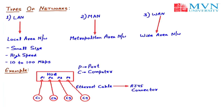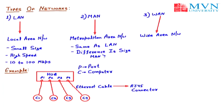The next type of network by size is MAN — Metropolitan Area Network. MAN is similar to LAN because the same topologies, connectors, and devices are used in both. The main difference is only the size and the area they cover. The size of MAN is greater than LAN. We can connect various buildings, labs, and colleges using hubs and switches, which are LAN and MAN devices.